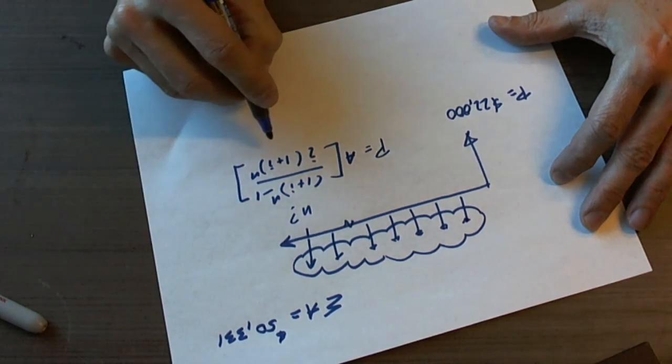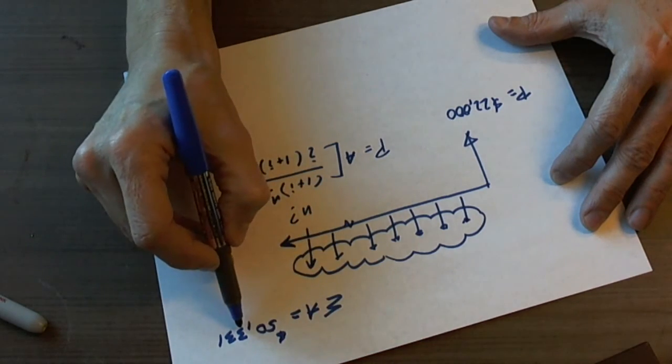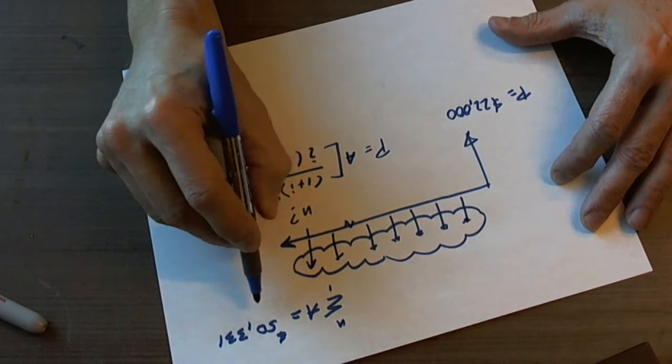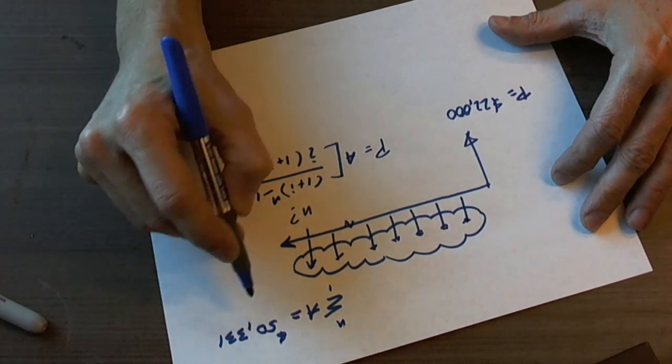The challenge in the problem is figuring out what is A. If the sum of all of these payments from 1 to n equals 50,331, then A equals 50,331 over n.